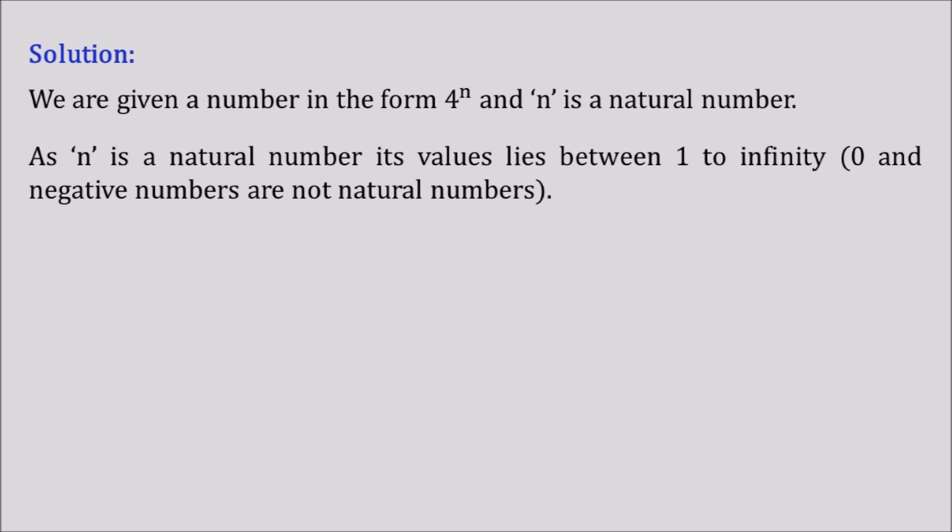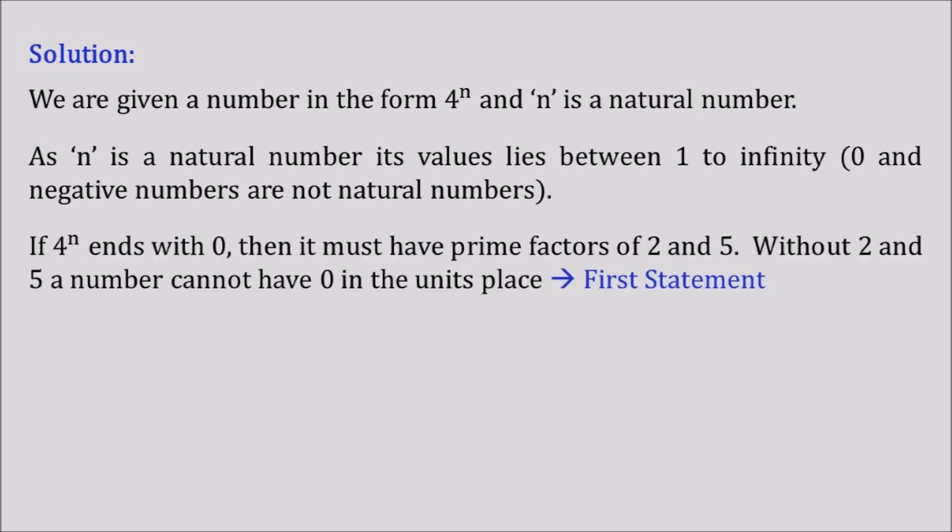Now let us move ahead keeping in view the concept of natural numbers. If 4^n ends with 0, then it must have prime factors of 2 and 5. Without 2 and 5, a number cannot have 0 in the units place. If we require a 0 in the units place, that particular number should have prime factors of 2 and 5. Let us see how it happens.